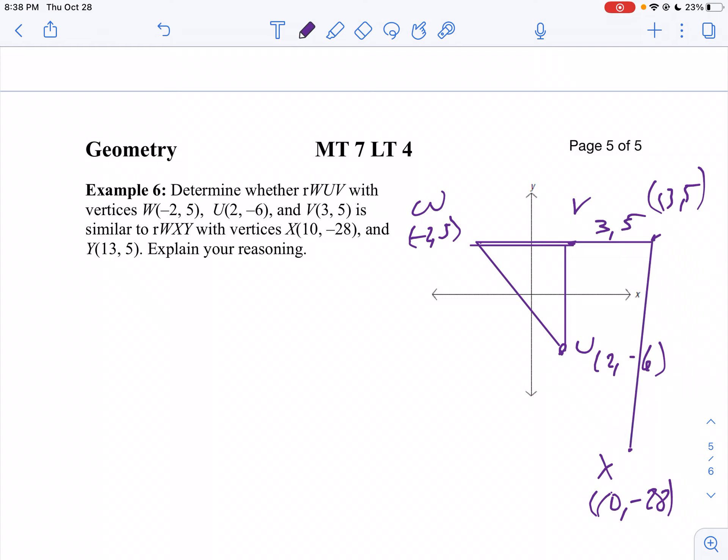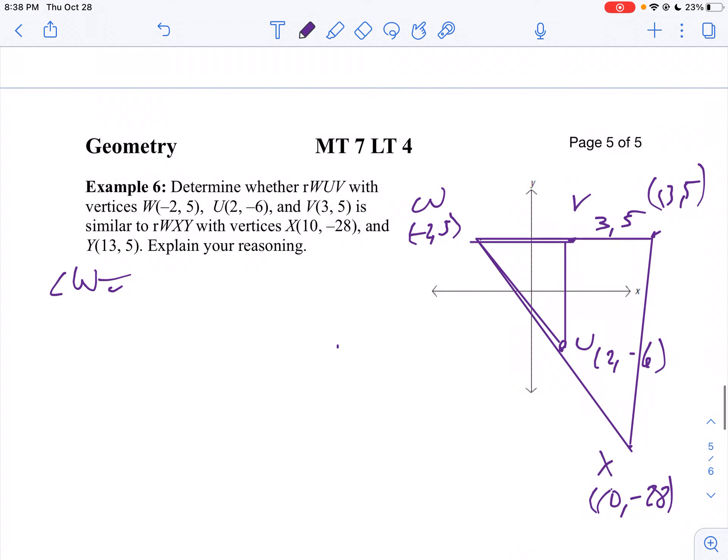Now, I do think if they are similar, it will be by side angle side similarity because angle W is in both triangles. So angle W is congruent to itself, we know that's always true. That would be by the reflexive property. They didn't ask you to state that, but I'm just writing that down.